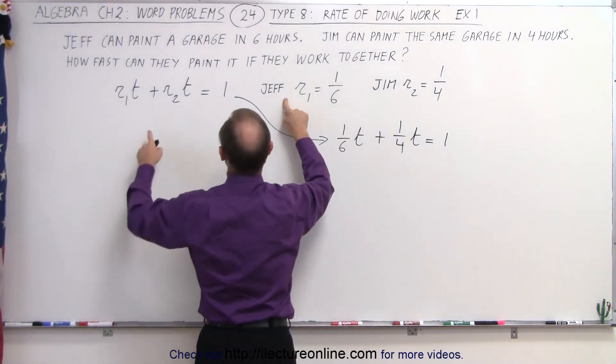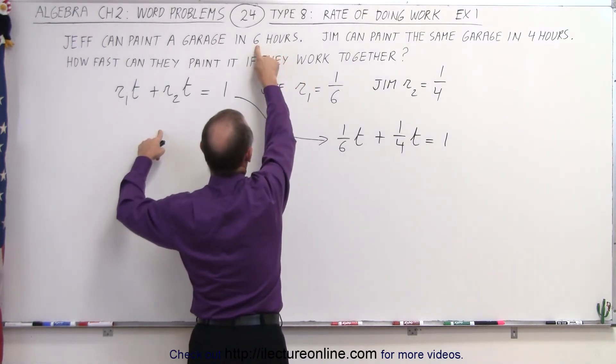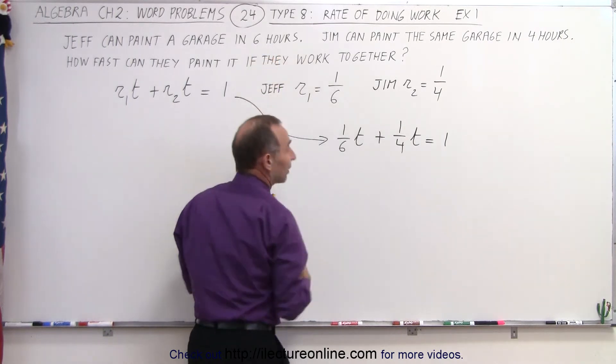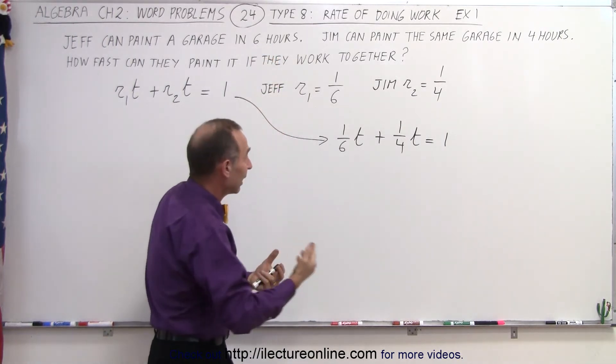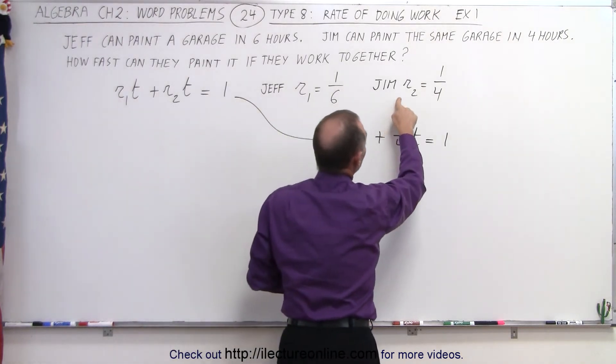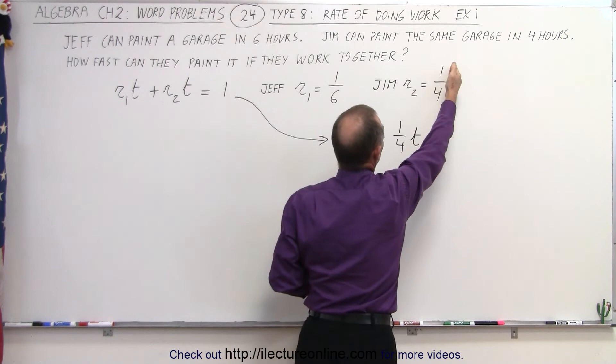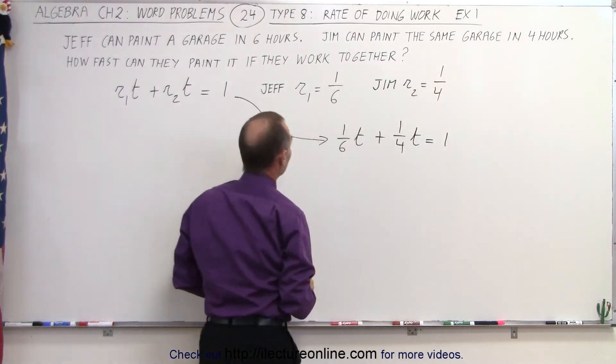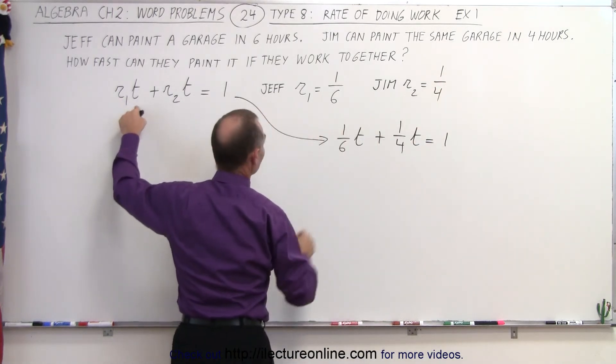And the rate of the first person, Jeff, will be the inverse of the total time taken to paint the garage. If he can paint in six hours, then every hour he'll paint one sixth of a garage. If Jim can paint the whole garage in four hours, then every hour he'll paint one fourth of the garage.